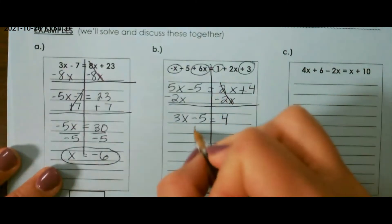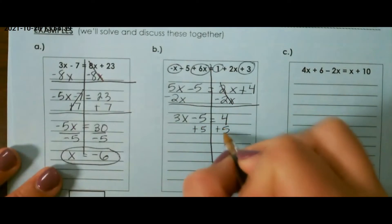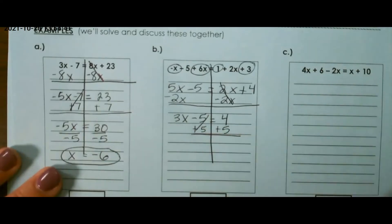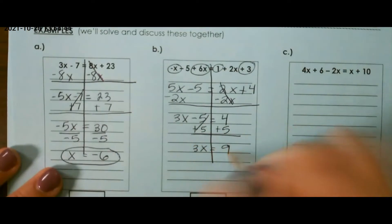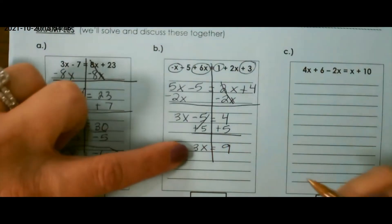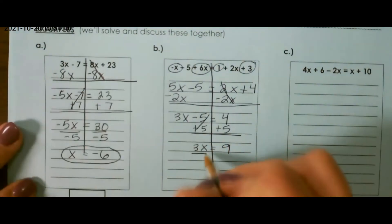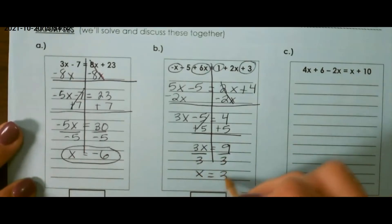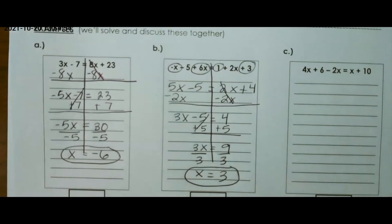Then, I'm going to add 5 to both sides. That cancels out and leaves me with 3x equals 9. The inverse of multiplication is to divide, so I divide by 3 on both sides, and that will leave me with x equals 3.